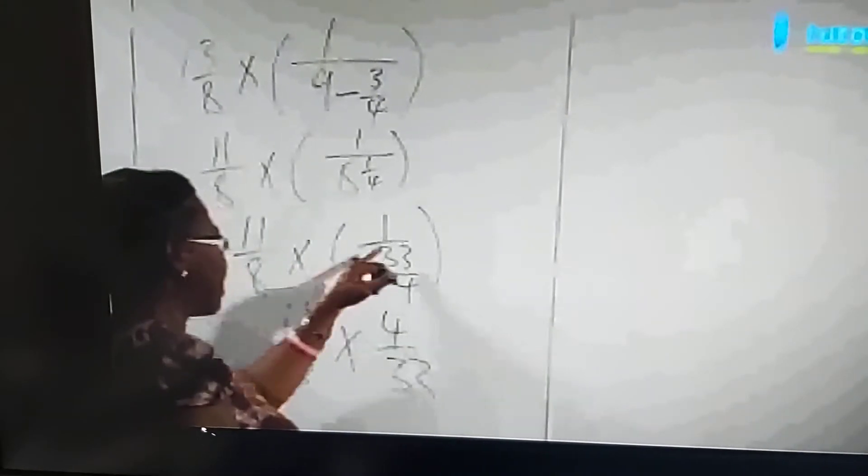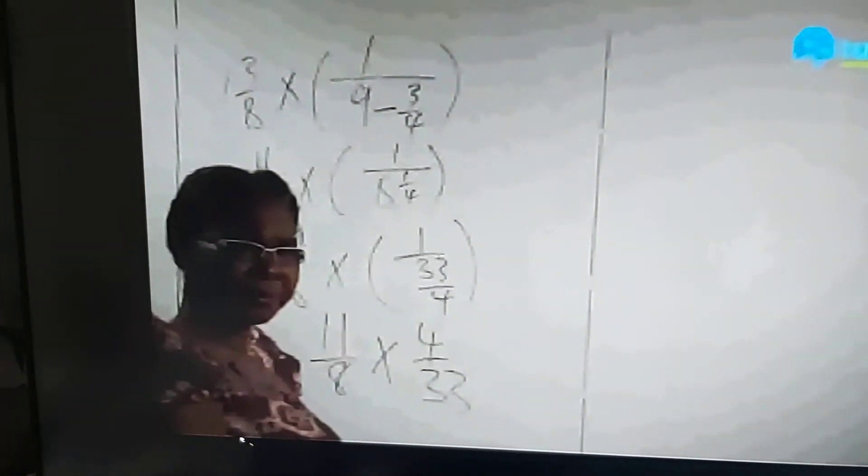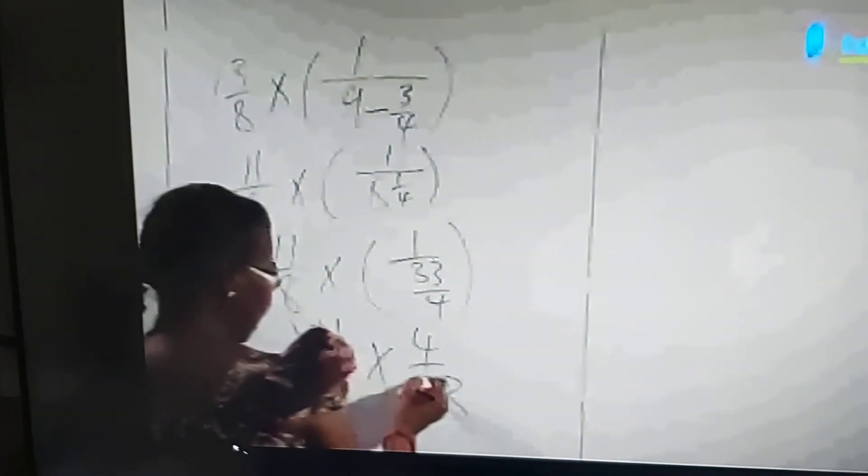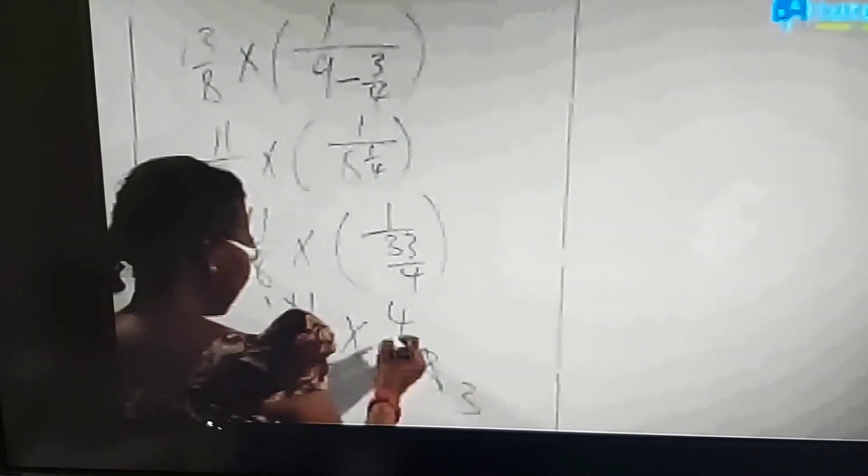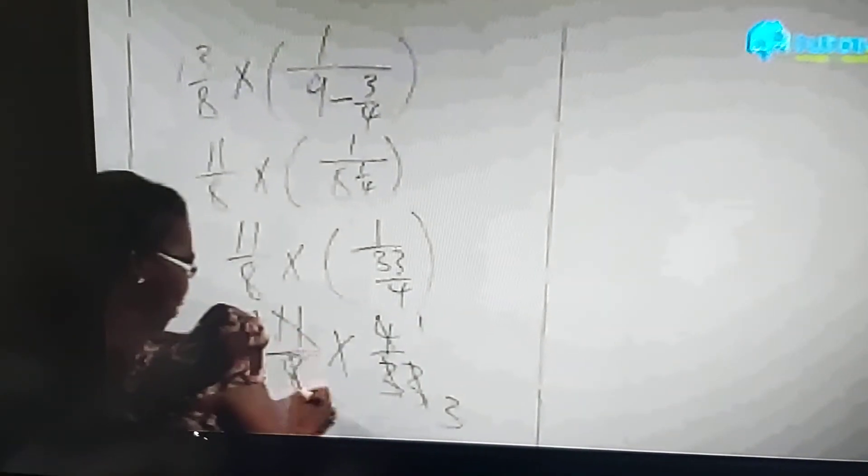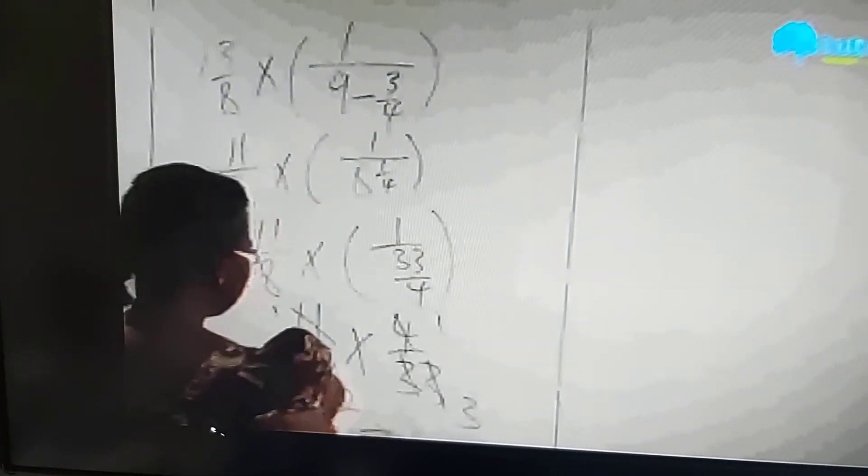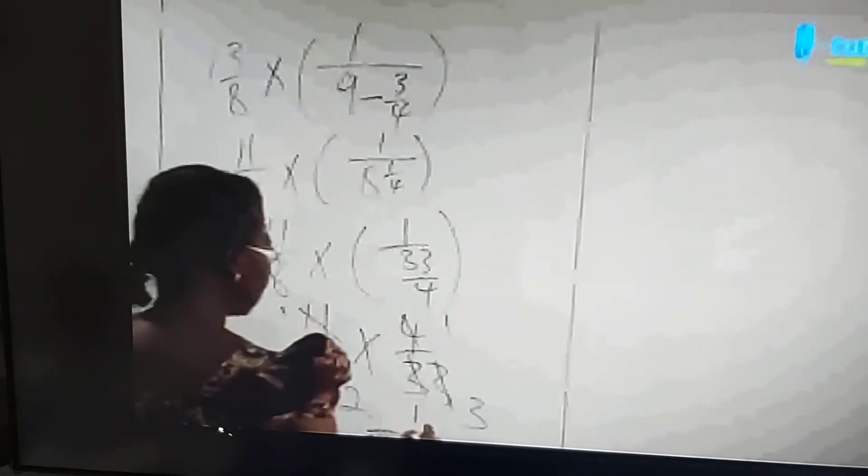Four cancels with 8 to give 1 and 2. So our answer is 1 times 1, which is 1, over 2 times 3, which is 6. The answer is 1/6.